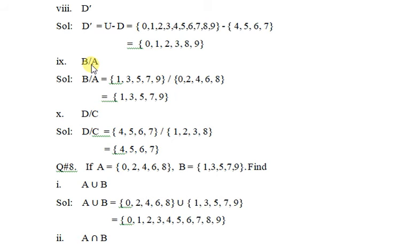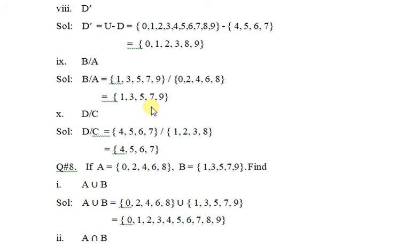Part number nine: B by A means set of B divided by set of A. In set B by A, there are no common elements between them. If there is no common element, we write the numerator values as they are in the answer. D by C: set of D will be written in the answer.